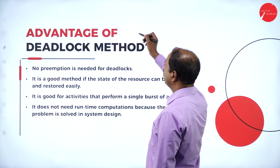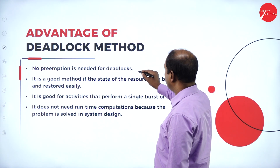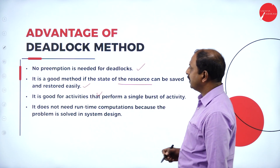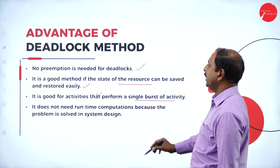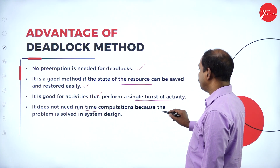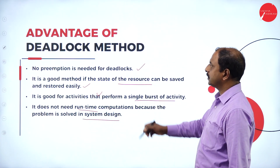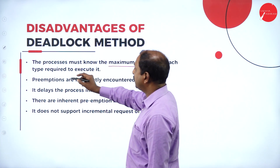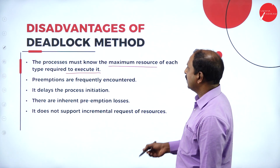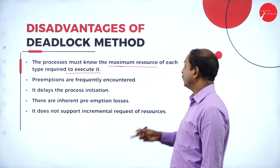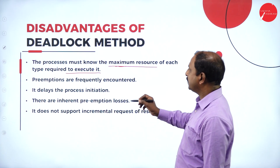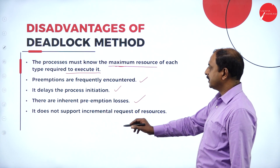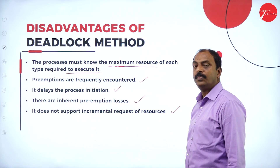The advantages of deadlock handling: no preemption is needed, it is a good method if the state of the resource can be saved and restored easily, it is good for activities that perform a single burst of activity, and it doesn't need any runtime computations because the problem is solved in system design. The disadvantages include: processes must know the maximum resources of each type required for execution, preemptions are frequently encountered which delays process initiation, there are inherent preemption losses, and it does not support incremental requests of resources.